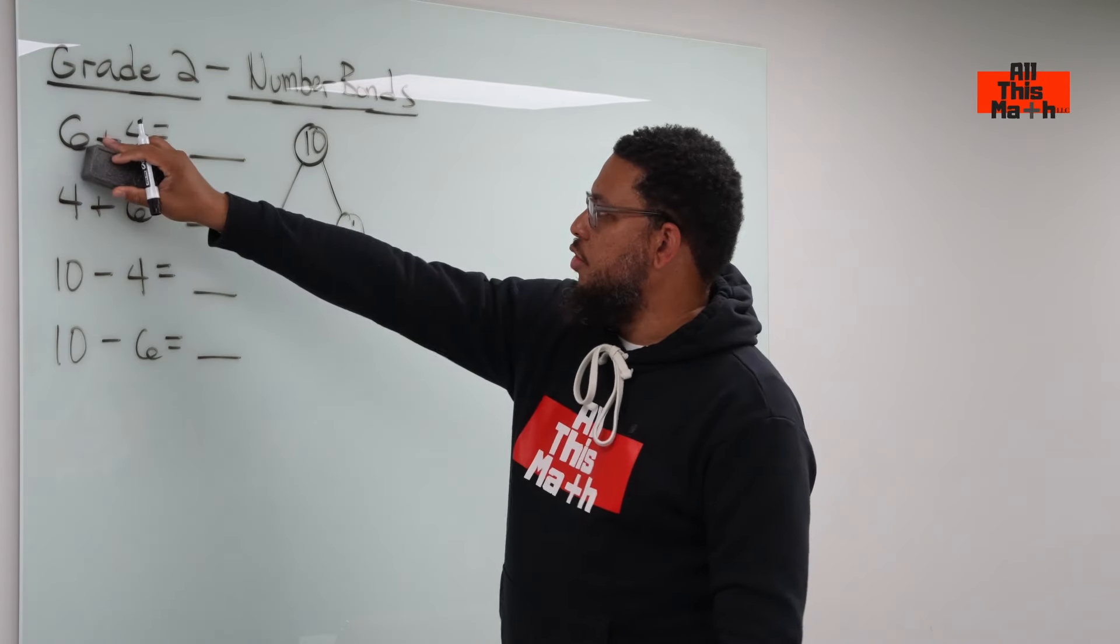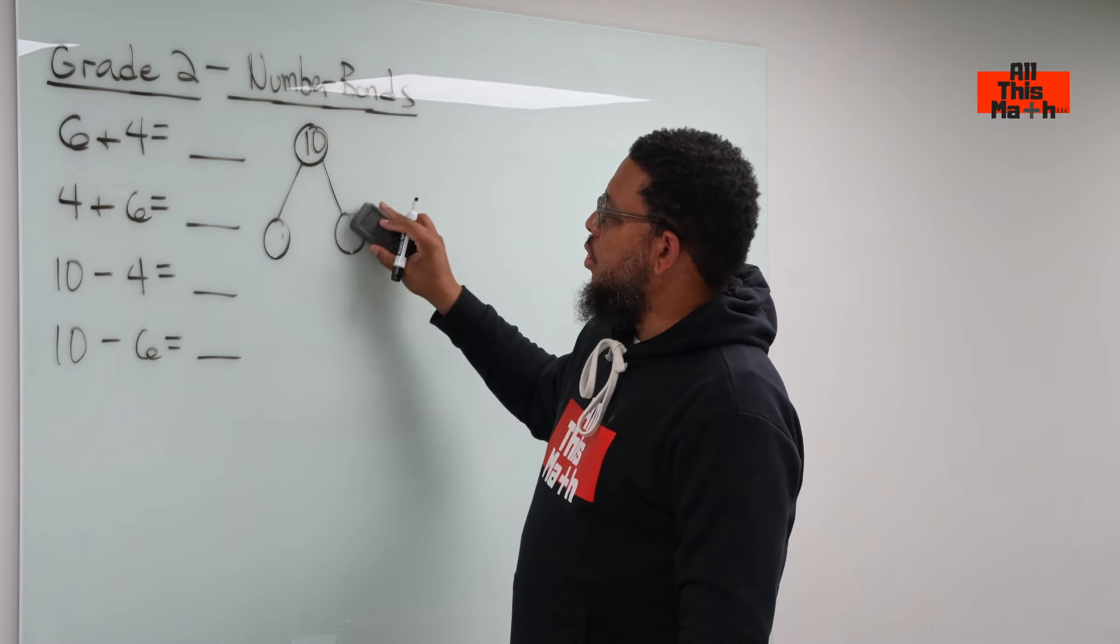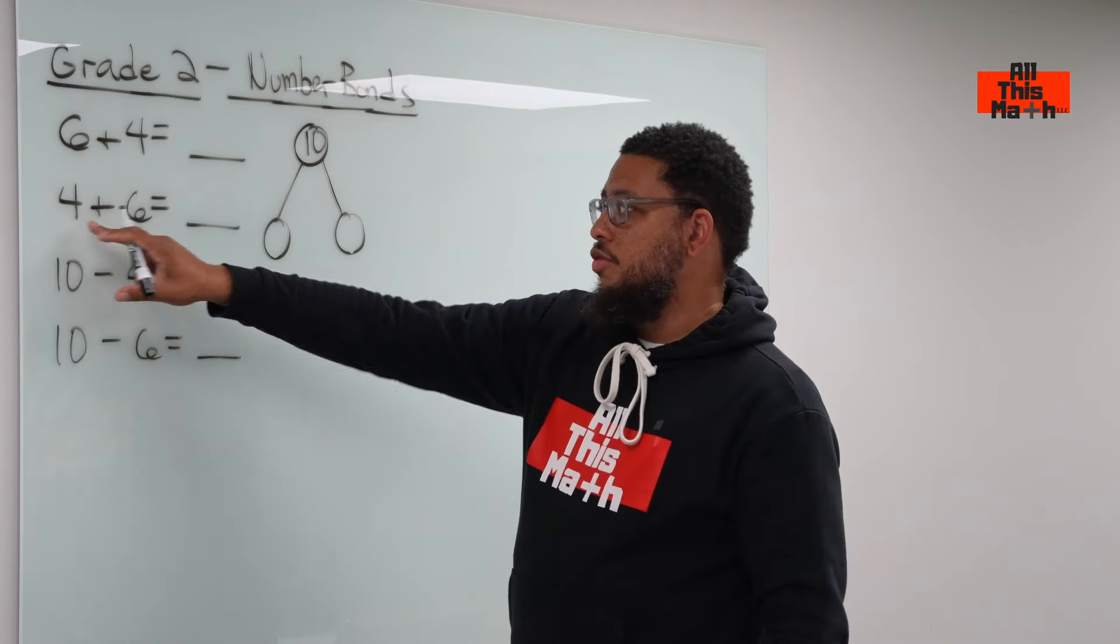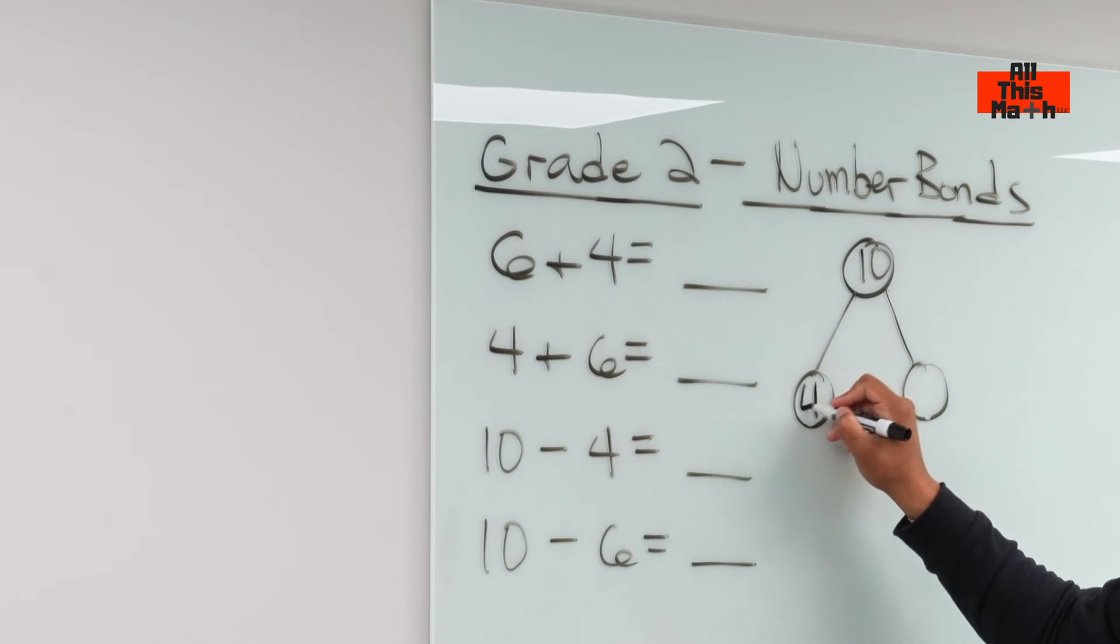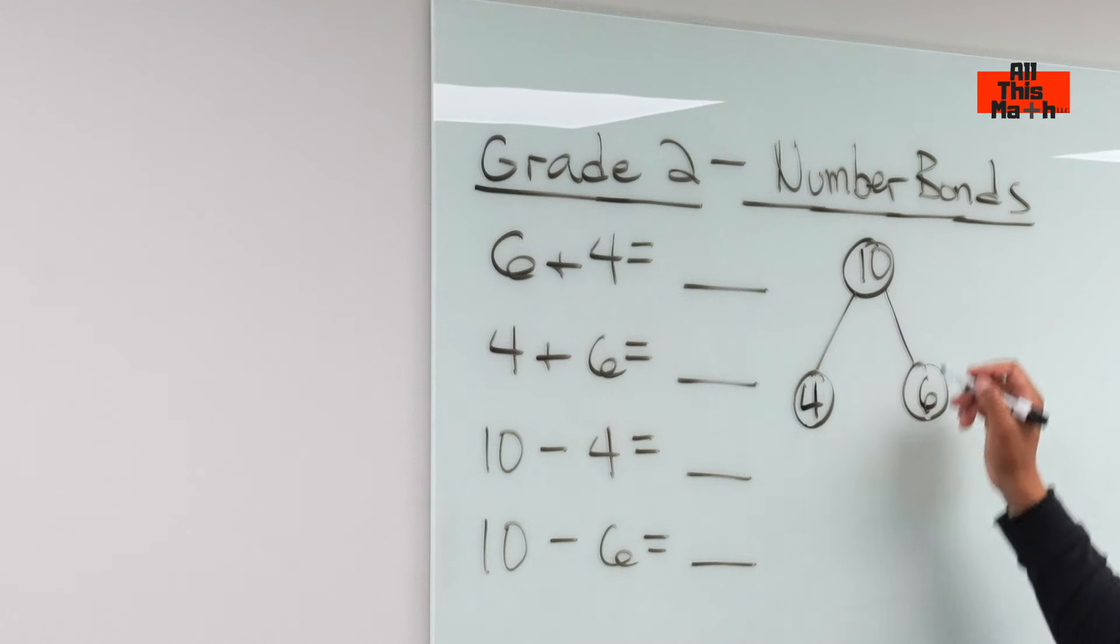Notice how the six was written first and the four was written second. So I wrote the six there and the four there, but now the four is written first and the six is written second. So we have a four and a six, and four plus six is also ten.